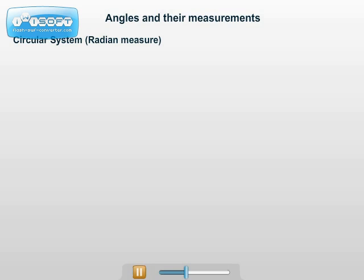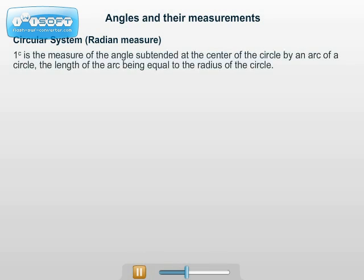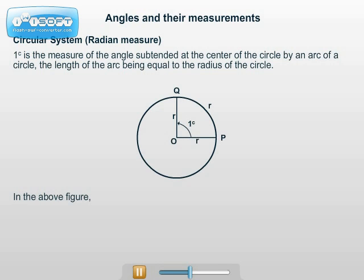Circular system, that is radian measure. 1 radian is the measure of an angle subtended at the center of a circle by an arc of the circle, the length of the arc being equal to the radius of the circle. In the above figure, angle POQ equals 1 radian and, as per convention, angle QOP equals minus 1 radian.